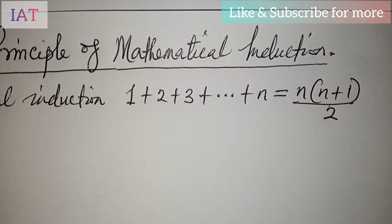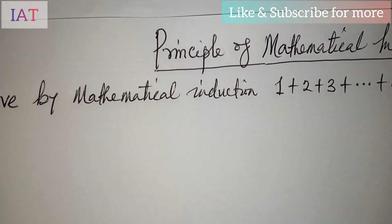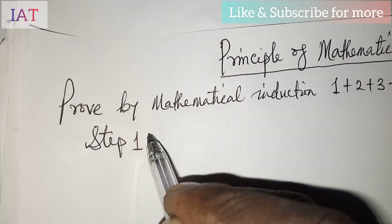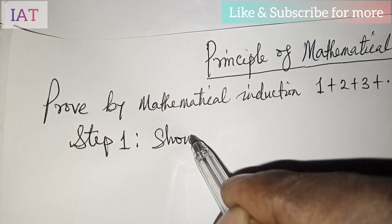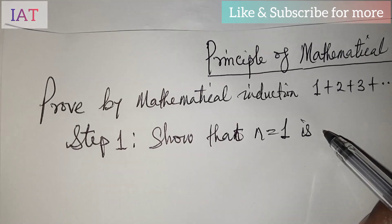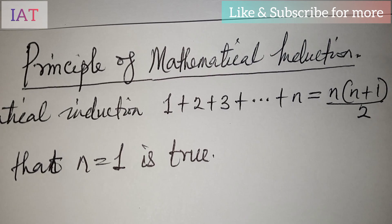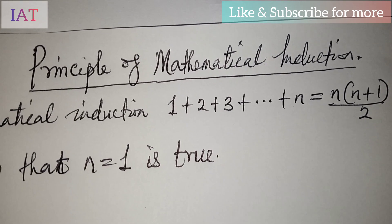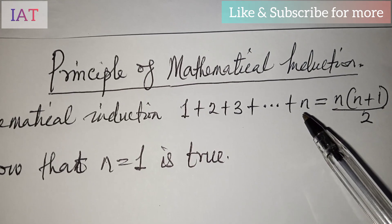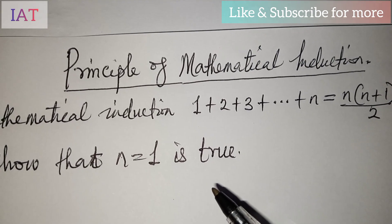The formula is equal to n(n+1) all over two. If you're new to this topic, do not worry — I'm going to take you through step by step. We have about three steps in solving this problem. The first step is to show that n equals one is true for all positive integers of n, meaning we substitute one everywhere we see n.